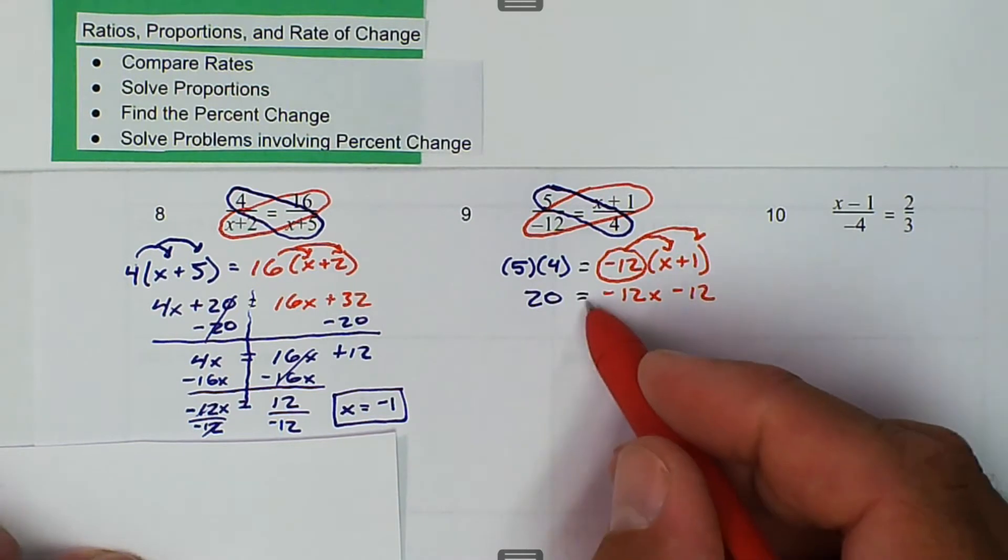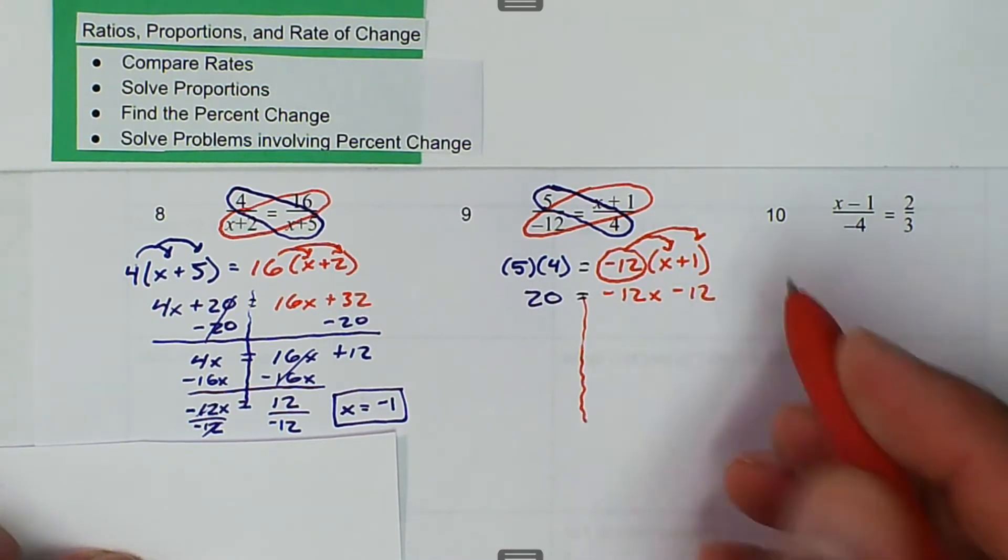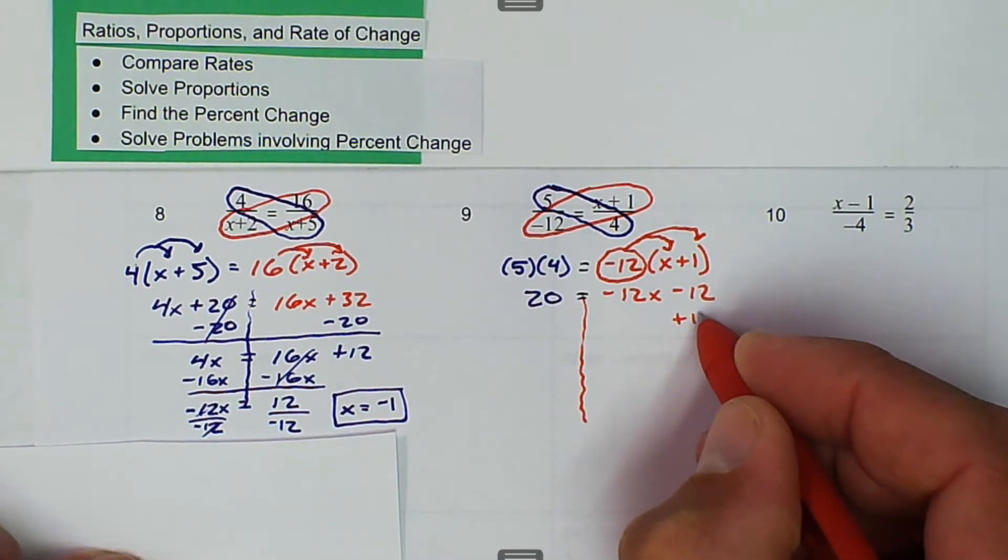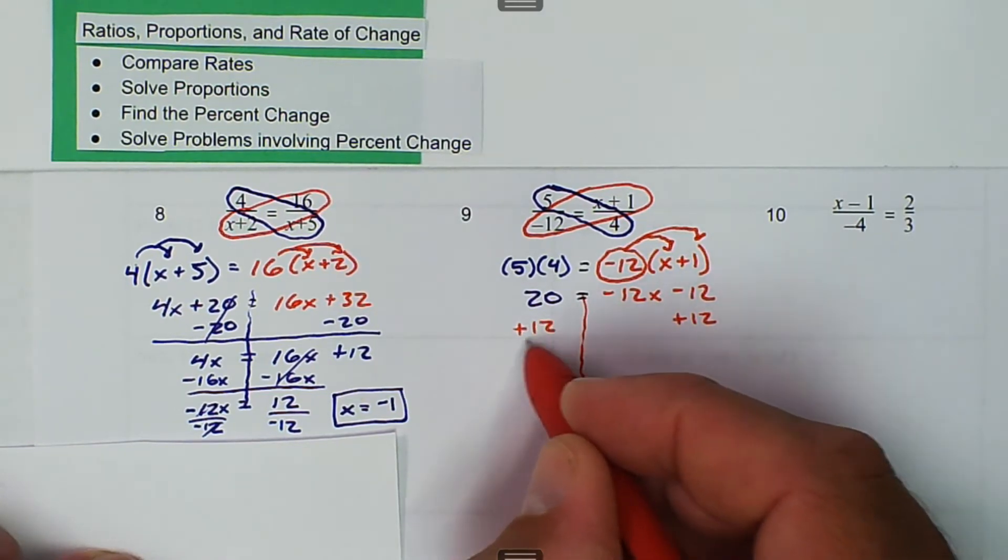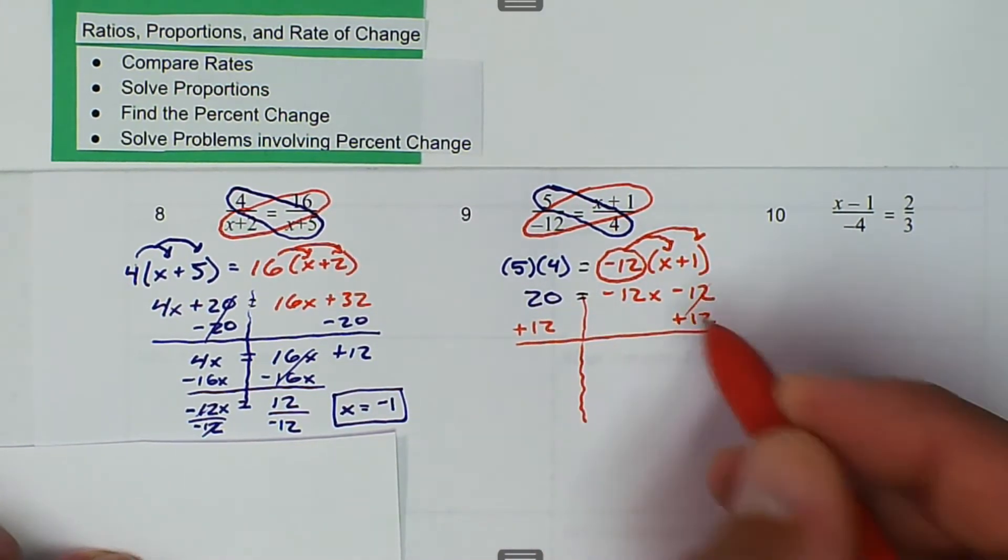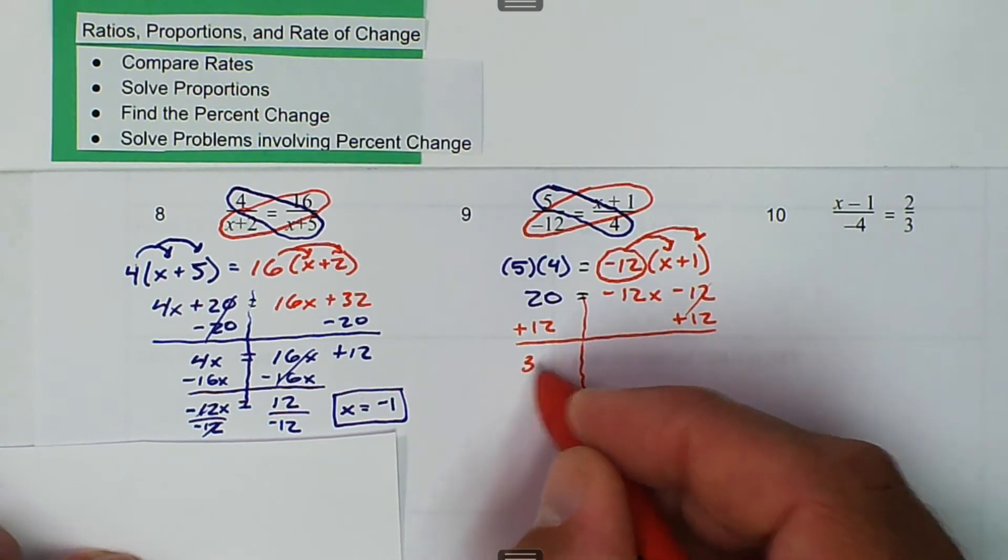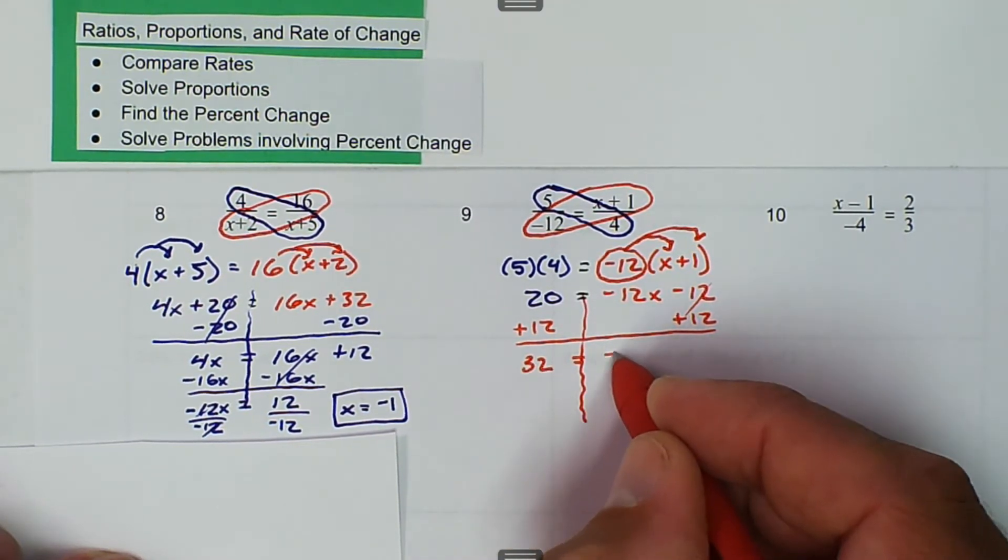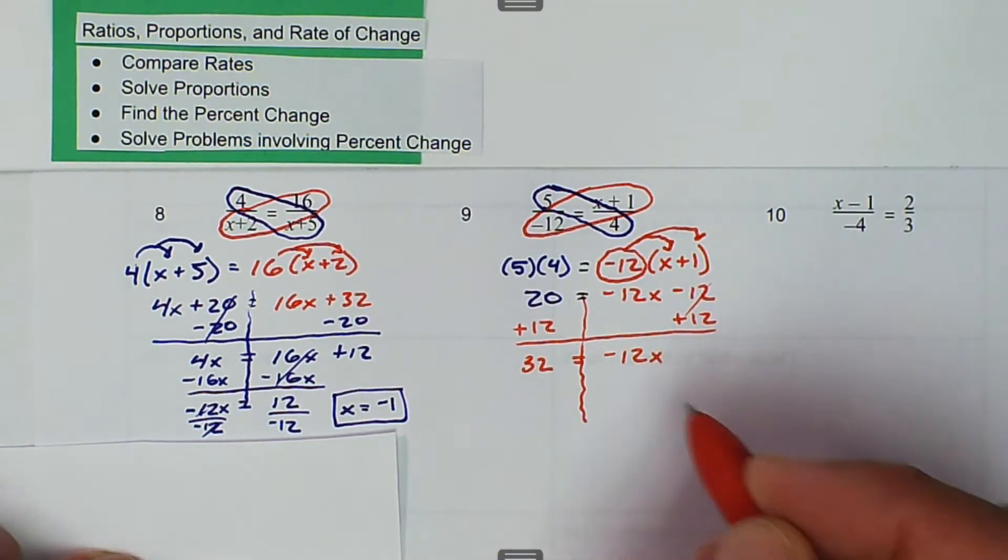From there, we want to solve. Whatever we do to the right or left, we've got to do to the other side. So we're going to add 12 to get the variable all by itself. Our 12s cancel. And we're left with 32 equals negative 12x.